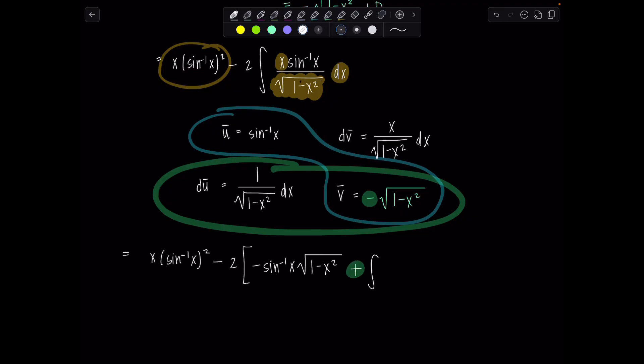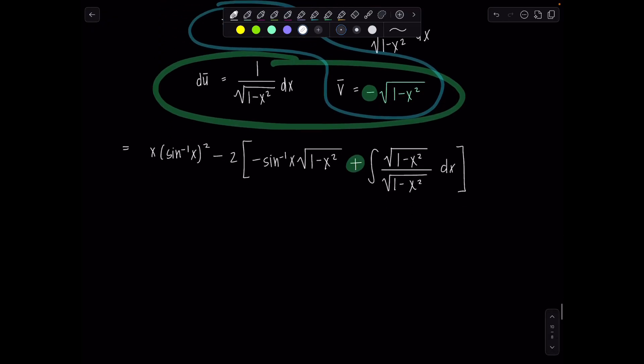And then look at this is so lovely. So v bar is square root one minus x squared. Du bar is one over square root one minus x squared and then I have dx. Oh from here it's smooth sailing. Are you excited? Yes yes we are professor v. Oh good. So this is x sine inverse of x squared. Let's distribute that negative two plus two sine inverse of x square root one minus x squared minus two.